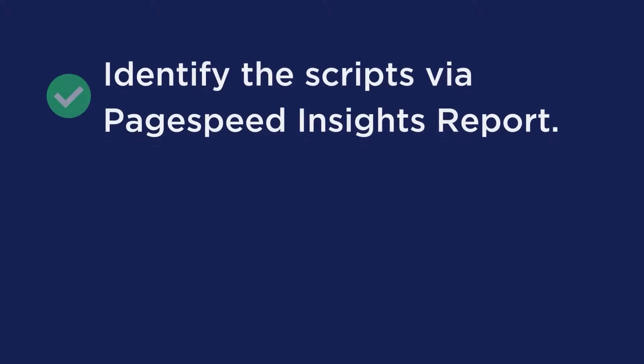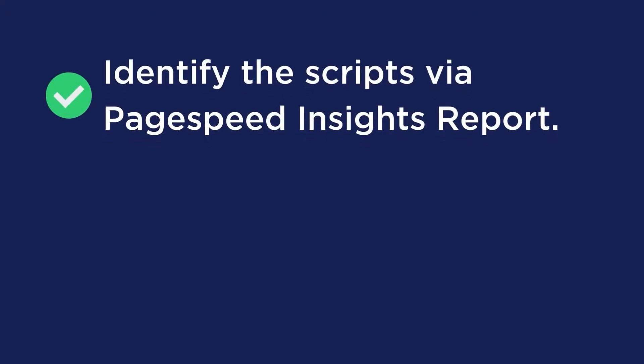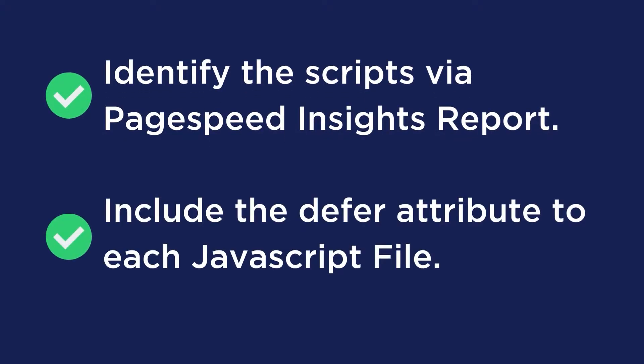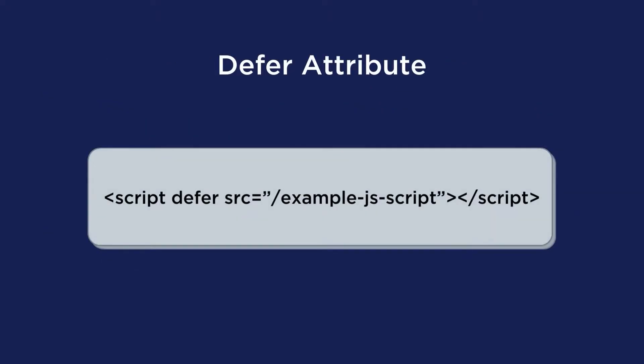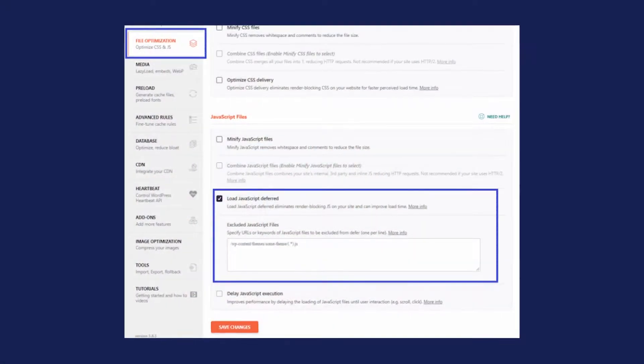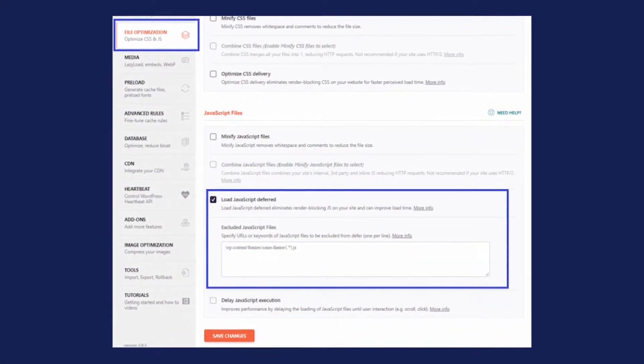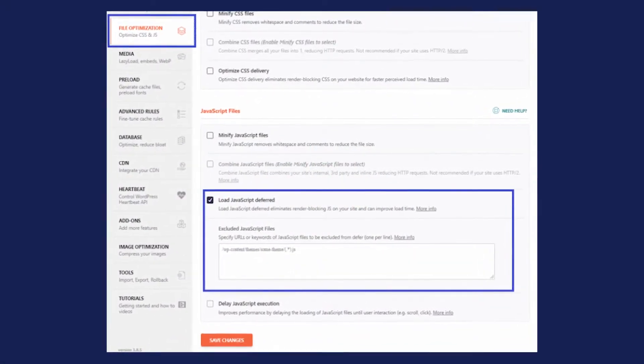To do this manually, there are two steps that you need to follow. First, identify the scripts via the PageSpeed Insights report, and second, include the defer attribute to each JavaScript file. If you need an example of the defer attribute, here it is on screen right now. But if you want a faster and simpler way to defer JavaScript, you can take advantage of the load JavaScript deferred feature provided by WP Rocket.